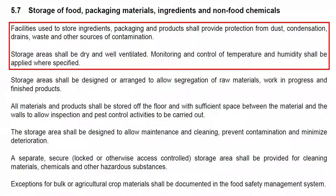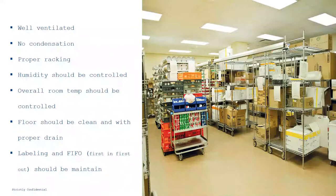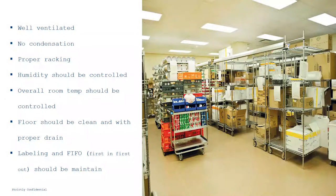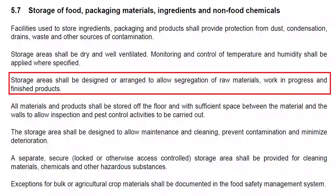Clause 5.7 is the last clause of this PRP: Storage of Food, Packaging Material, Ingredients, and Non-Food Chemicals. The storage area should be well ventilated with no condensation, have proper racking using racks or pallets, and have controlled humidity and overall room temperature. The floor should be clean with proper drainage, labeling, and first-in-first-out (FIFO) order maintained.